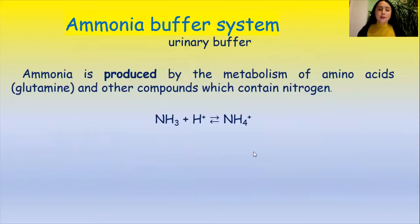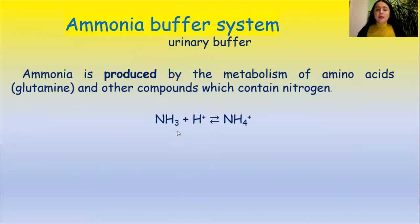The ammonia buffer system is a urinary buffer. Ammonia is produced by the metabolism of amino acids like glutamine and other nitrogen-containing compounds. This buffer consists of NH₃, a Brønsted-Lowry base because it can accept protons, and NH₄⁺ ammonium ions, which is the conjugate acid.